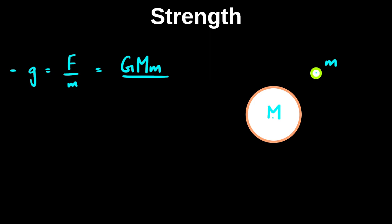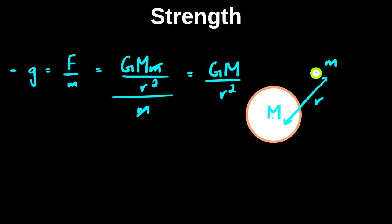R is the distance between their centers. So GM upon R squared is the force, divided by the mass which is in the field. The m's cancel out pretty obviously, and what you are left with is this expression for the gravitational field strength due to a point mass: g = GM/R². This is something that we will be using a lot.